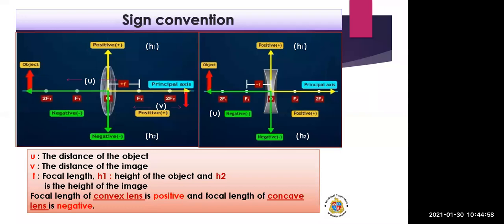H1 is the height of the object, measured from the principal axis. H2 is the height of the image. The focal length of a convex lens is positive and that of a concave lens is negative.